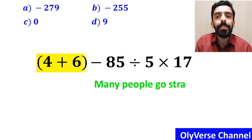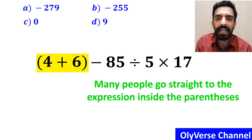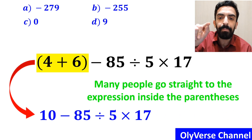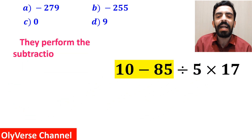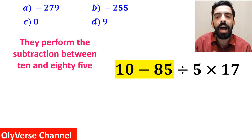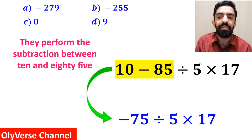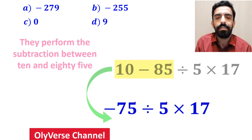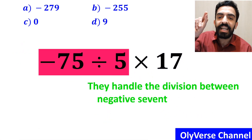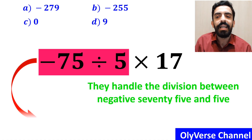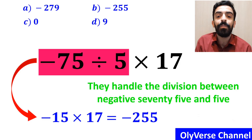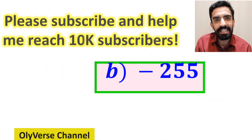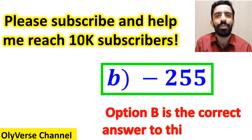The first common mistake: many people go straight to the expression inside the parenthesis and simplify the whole expression to 10 minus 85 divided by 5 times 17. Then they perform the subtraction between 10 and 85, simplifying to negative 75 divided by 5 multiplied by 17. Finally they divide negative 75 by 5 to get negative 15 multiplied by 17, which gives them negative 255. Without hesitation they say option B is the correct answer.